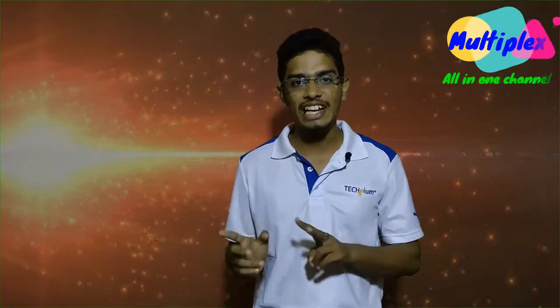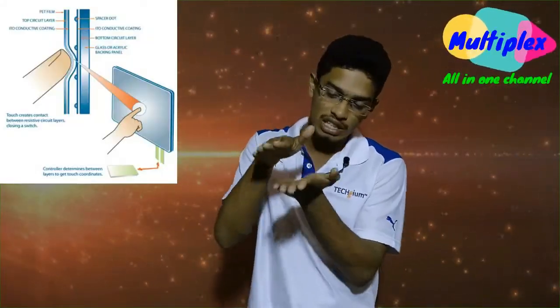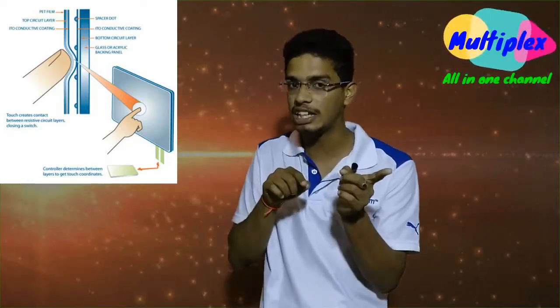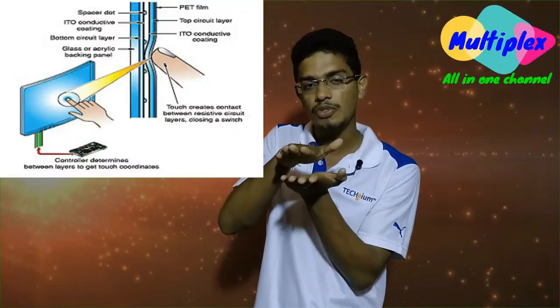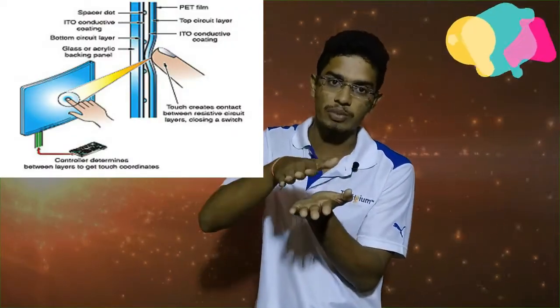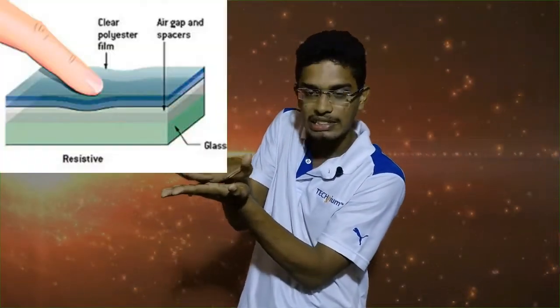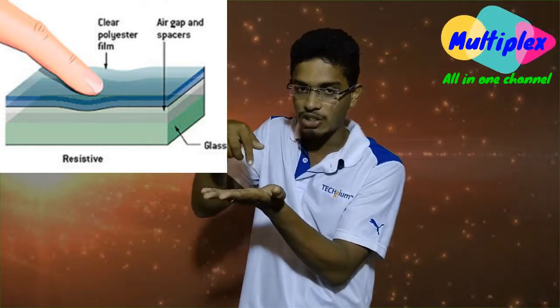Now we have the resistive touch screen. Here we have two layers: a glass layer and a plastic layer. Both are coated with indium tin oxide on the inside. When we press the screen, the top plastic layer bends and touches the bottom layer, creating a current flow at that contact point.